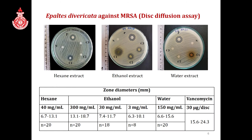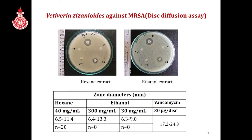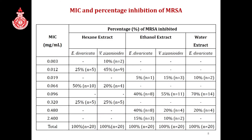In Hippeltis divaricata, all types of extracts inhibited all strains of MRSA. You can see the inhibitory zones of the plant extracts compared against vancomycin, with zone diameters given in the table. For Vetiveria, except for the water extract, both hexane and ethanol extracts inhibited the majority of MRSA strains. Inhibitory zones against vancomycin are also shown.